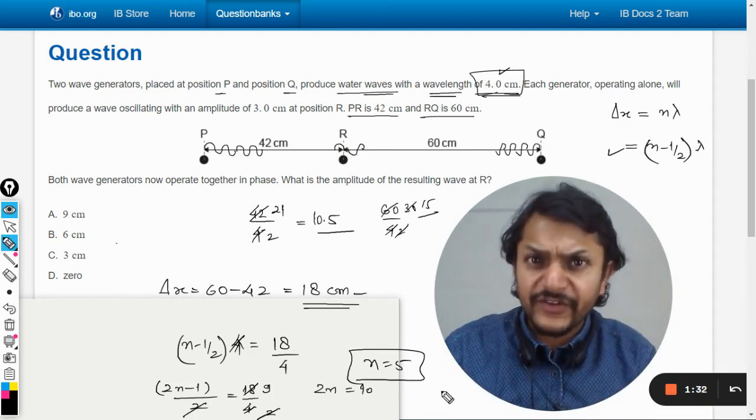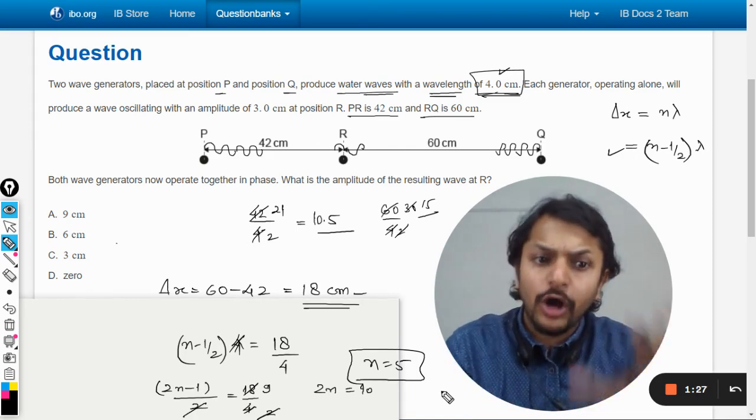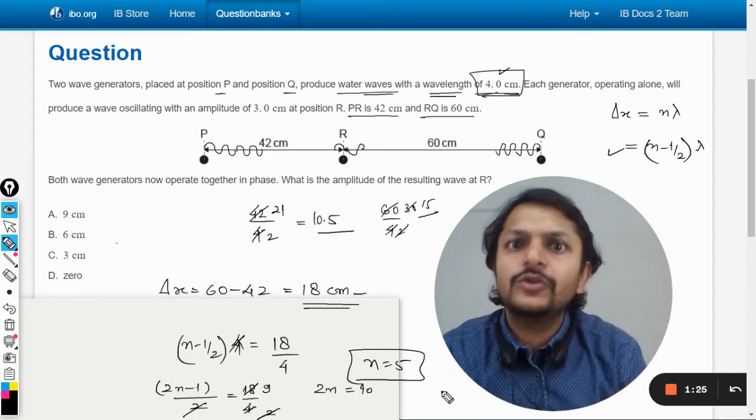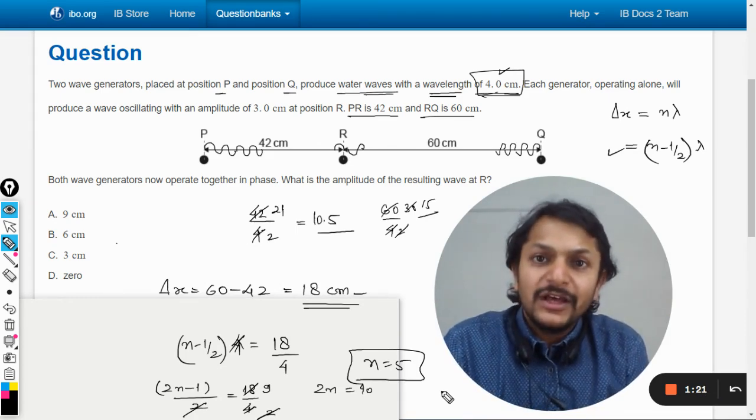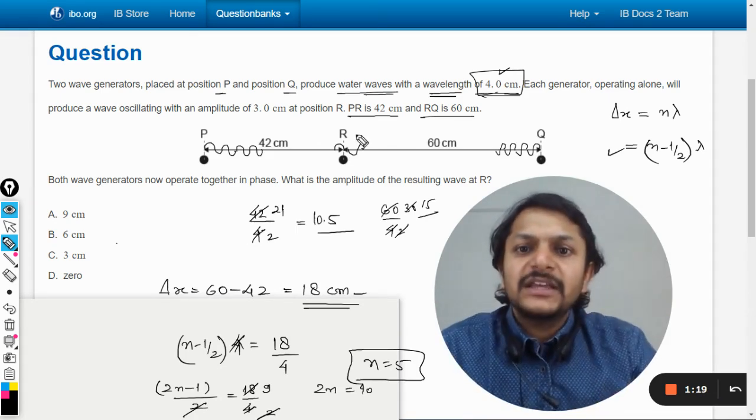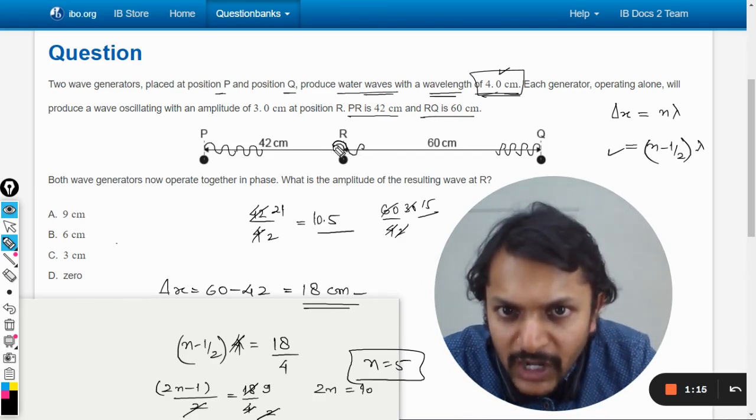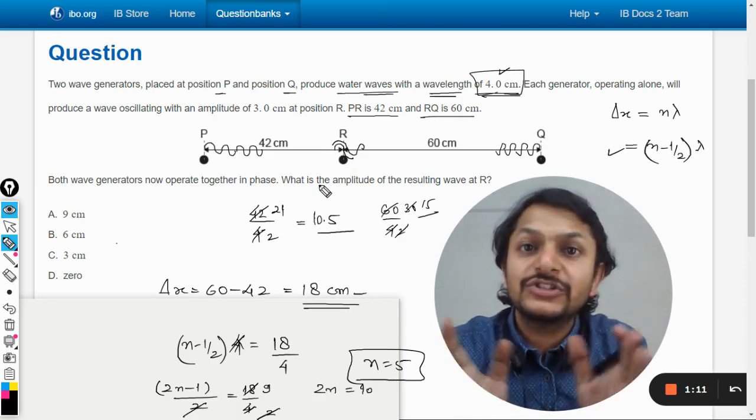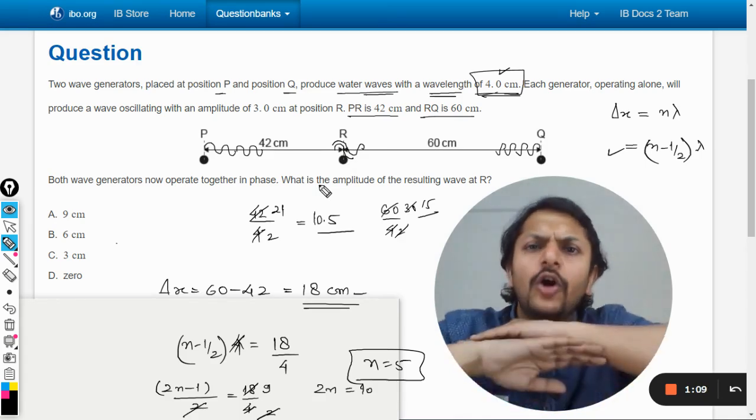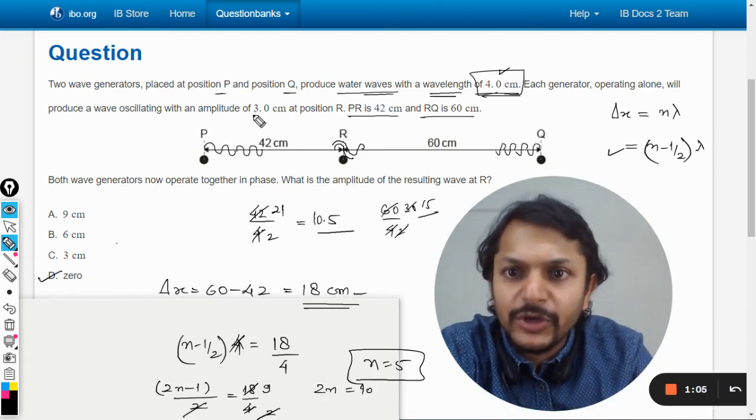This is not a proper interference case, but they are interfering destructively, there is no doubt about it. One wave is going up, the other wave is going down, so at R there is no sound reaching. It is always having destructive interference, hence the amplitude is zero.